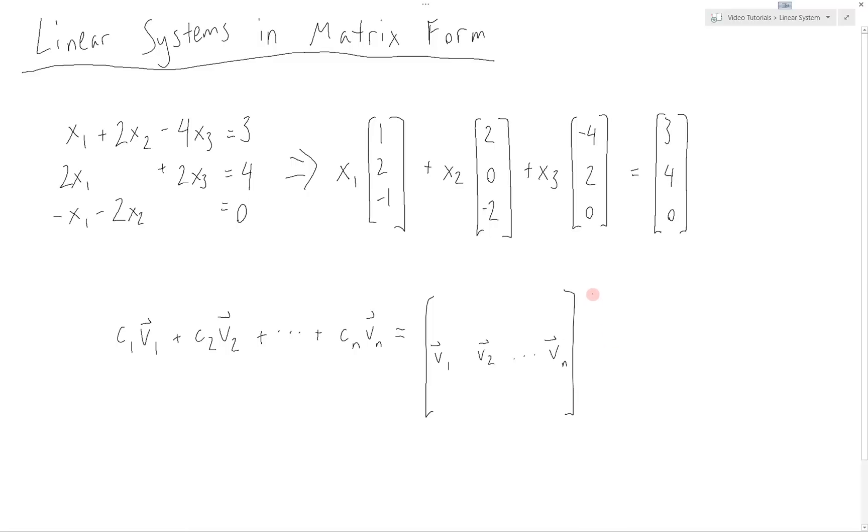times a vector which is made up of the coefficients c1, c2, down to cn. These two are equivalent, where again, the columns of the matrix are the vectors in the original equation, and the coefficients are in a vector of their own.